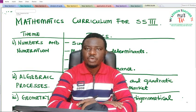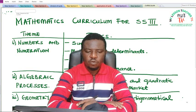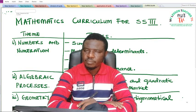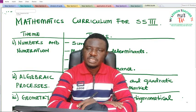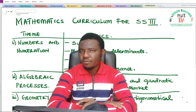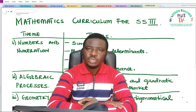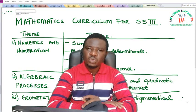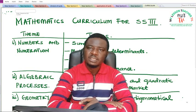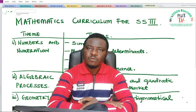We shall be looking at the curriculum in mathematics for SS3. The curriculum for SS3 is divided into five themes. We have four themes which are a continuation of the SS1 and SS2 themes, and the fifth theme is the introduction of calculus.